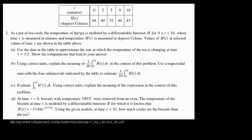As a pot of tea cools, the temperature of the tea is modeled by a differentiable function h, for 0 ≤ t ≤ 10, where time t is measured in minutes and temperature h(t) is measured in degrees Celsius. Values of h(t) at selected values of time t are shown in the table. Use the data in the table to approximate the rate at which the temperature of the tea is changing at time t = 3.5. Show the computations that lead to your answer.